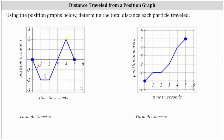Then from two seconds to four seconds, the particle travels from a position of negative two meters to a position of positive two meters. From two to three seconds, the particle travels from negative two meters back to the starting position, which is two meters. Then from three to four seconds, the particle travels two meters in the positive direction, resulting in a total distance of four meters from two seconds to four seconds.